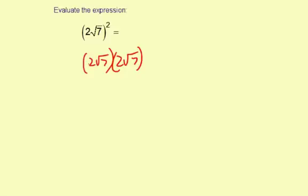What we can do is multiply the numbers outside the radical and the numbers inside the radical. So, 2 times 2 makes 4 and radical 7 times radical 7 makes radical 49. So we have 4 times radical 49.